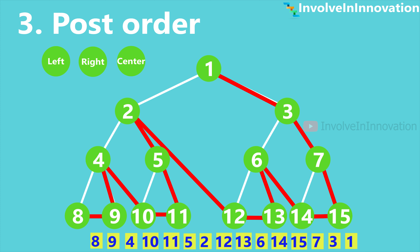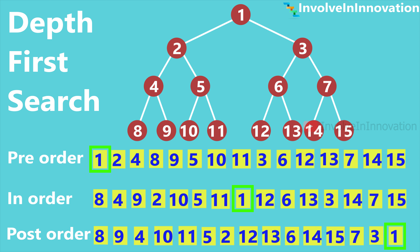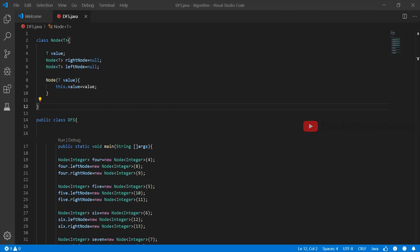In pre-order, the root node is placed before left and right. In in-order, the root node is placed in the center. In post-order, the root node is placed at the last. In pre-order, the root node is traversed first, then left and right nodes. In in-order, left node is traversed first, then root node, then right node. In post-order, left and right nodes are traversed followed by the root node. The terms pre, in, and post are names given based on the position of the root node.